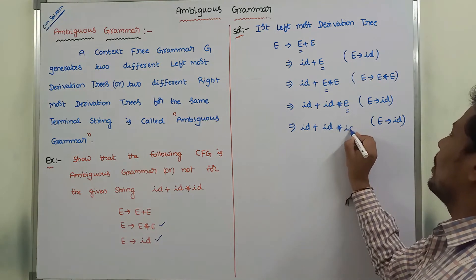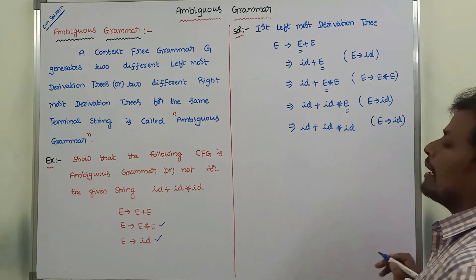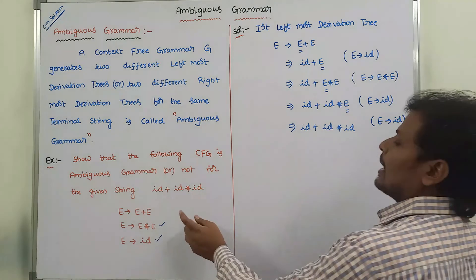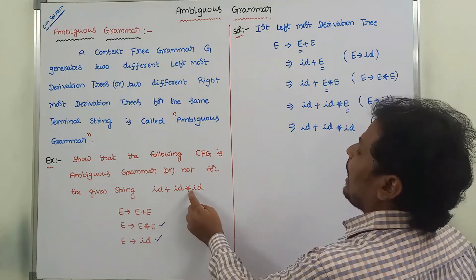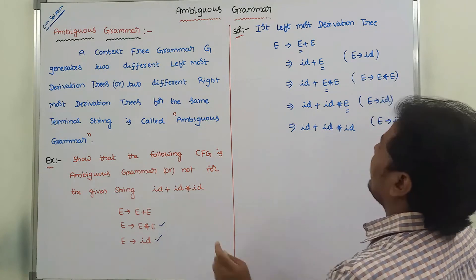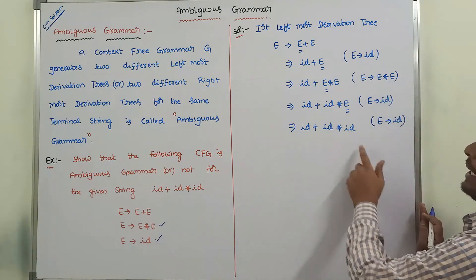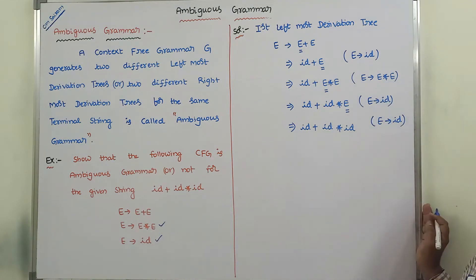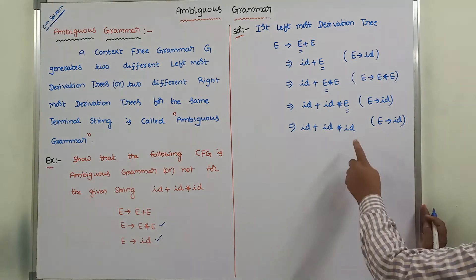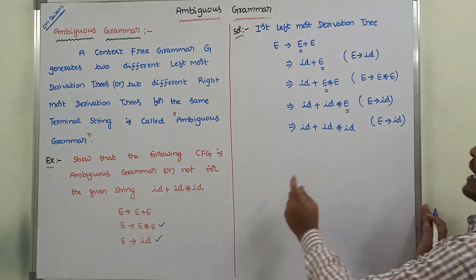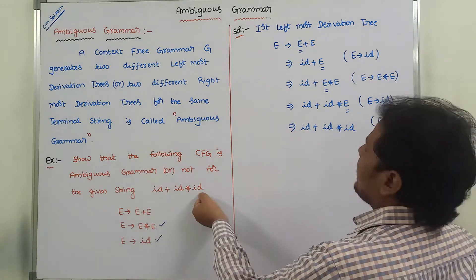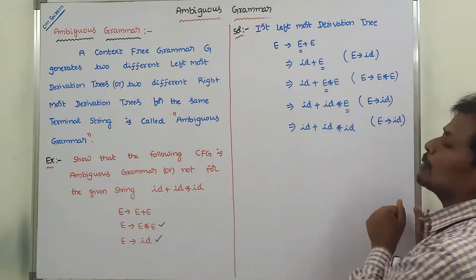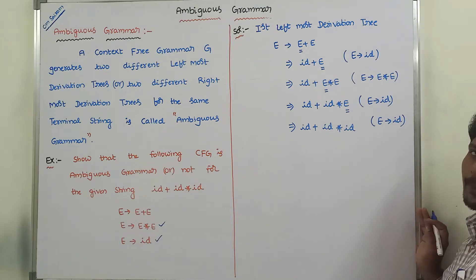Now, we are getting the terminal string id plus id star id. Whenever we are getting this terminal string, we have to stop the procedure.